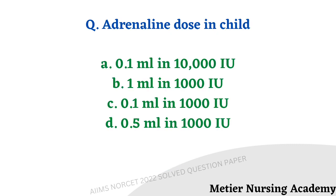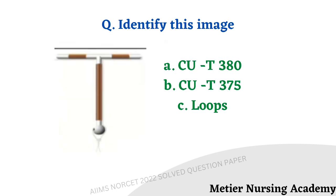Adrenaline dose in a child: options are 0.1 ml in 10,000 international units, 1 ml in 1000 international units, 0.1 ml in 1000 international units, and 0.5 ml in 1000 international units. The right answer is option A, 0.1 ml in 10,000 international units. Identify this image: Copper T 380 or Copper T 375 loops. It is an easy and direct question, and the right answer is option A, Copper T 380.